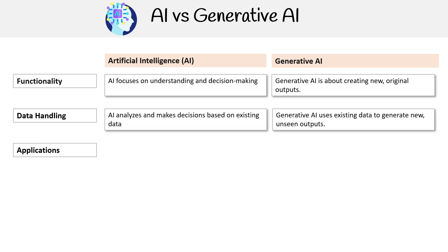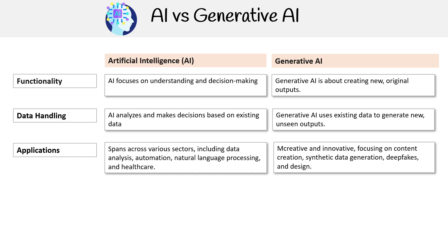For data handling, AI analyzes and makes decisions based on existing data, whereas gen AI uses existing data to generate new data and unseen outputs. For applications, AI is generally more broadly applicable, while gen AI is very focused on the creative, innovative generation of synthetic content.